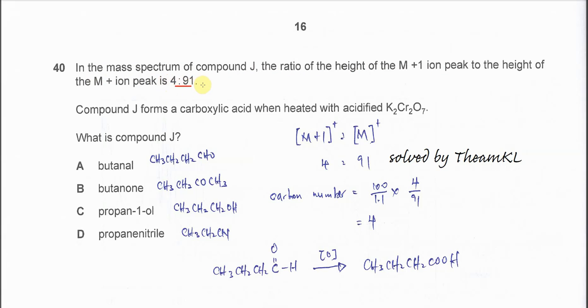We can use this ratio to calculate the carbon number later. Compound J forms a carboxylic acid when heated with acidified potassium dichromate. So we know that J can be oxidized. So what is compound J?